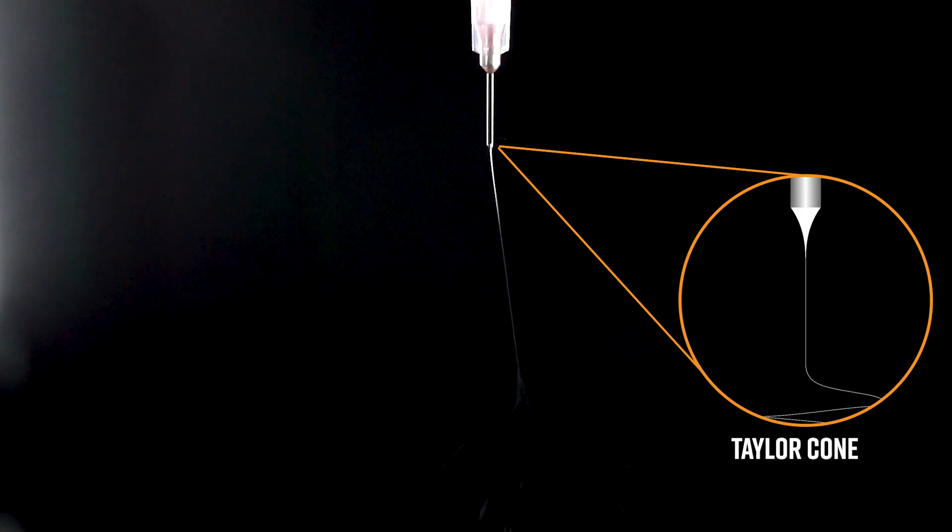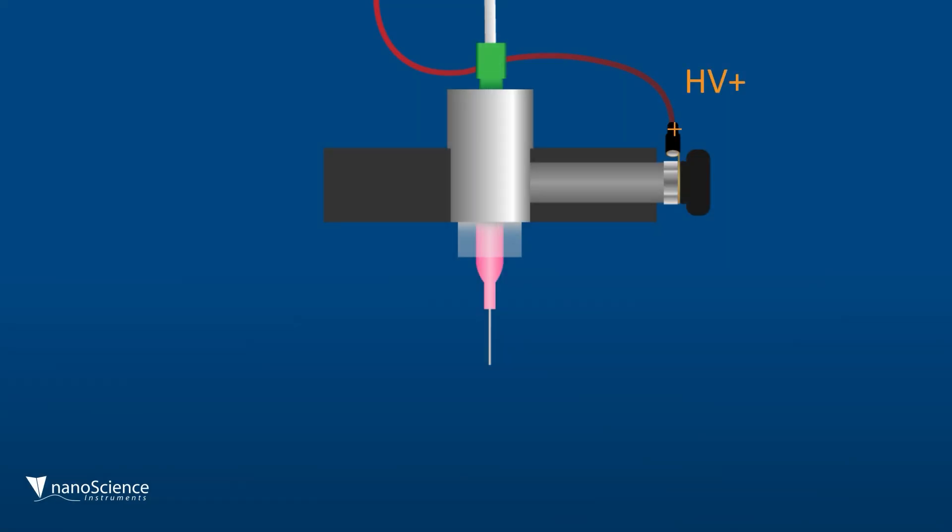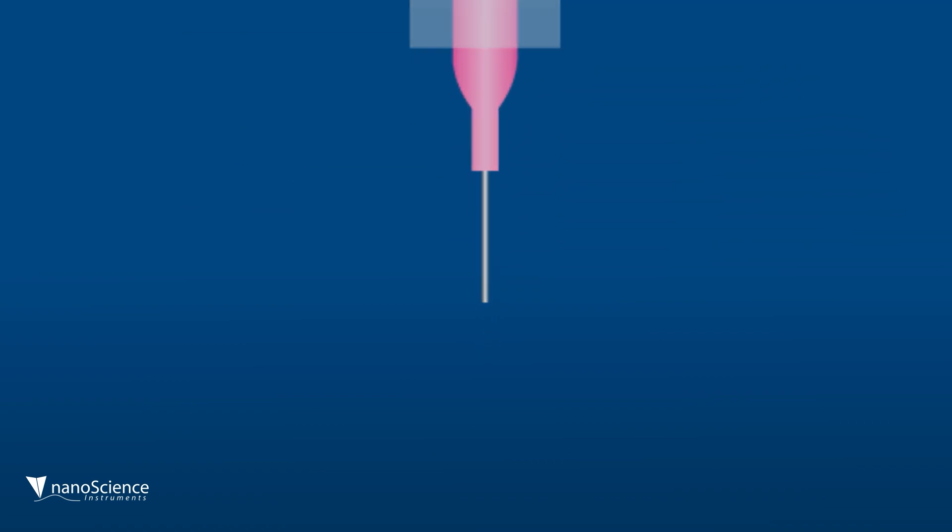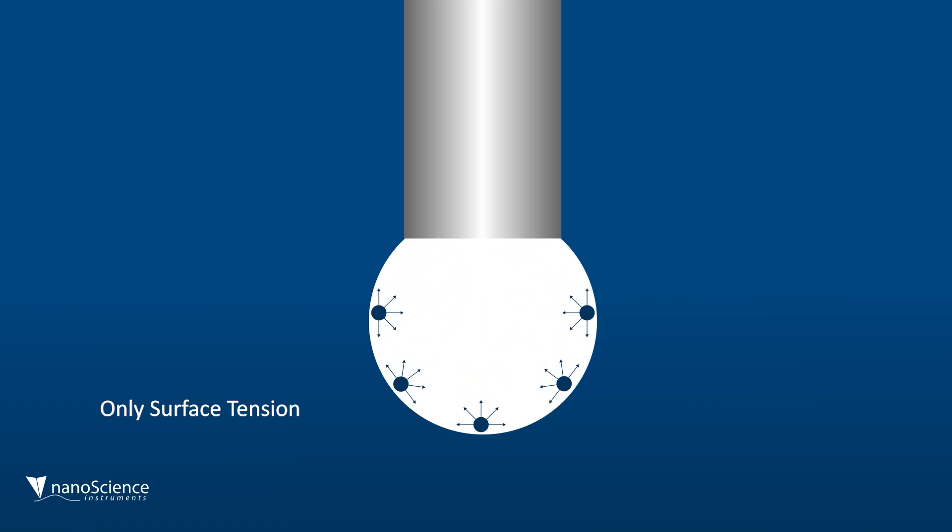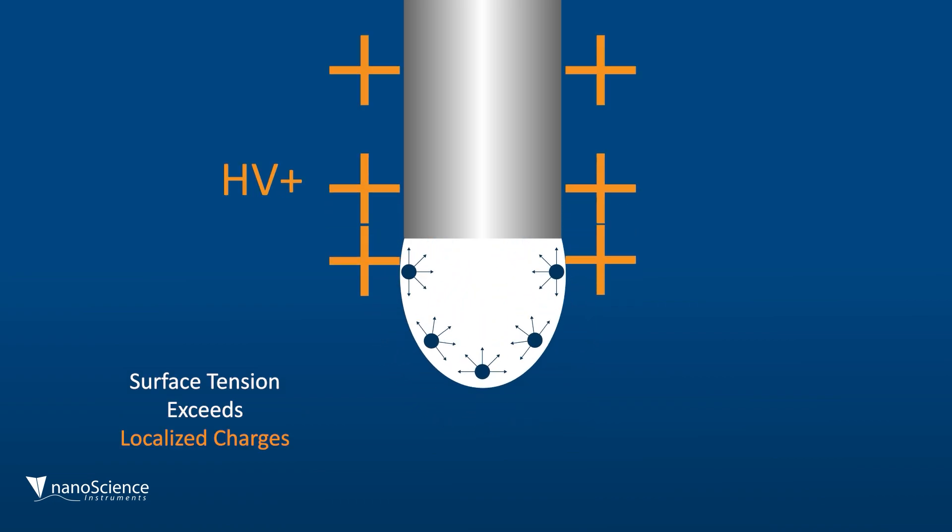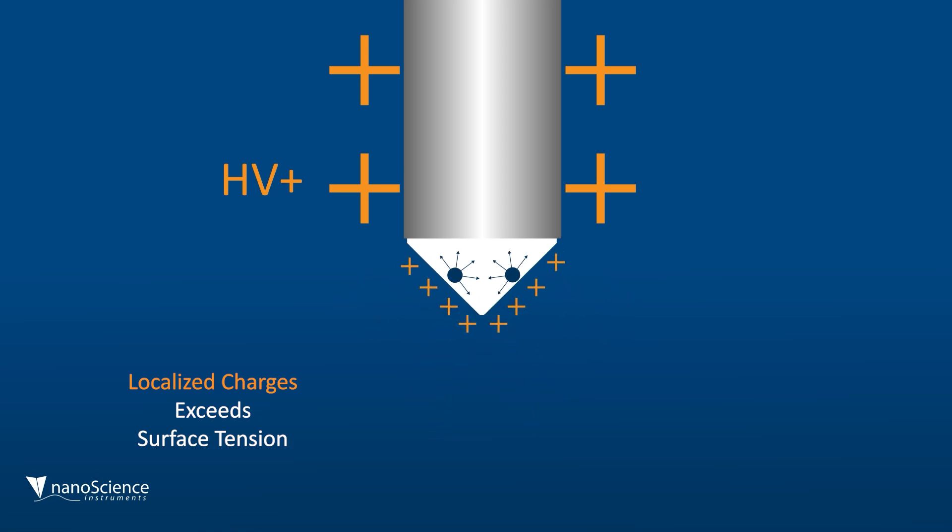When we apply a high voltage to our polymer solution, charges build up along the surface of the solution until the electric forces overcome the surface tension. The liquid at the tip of the needle stretches and elongates, forming this distinct cone shape. This geometry is the key to electrospinning success.